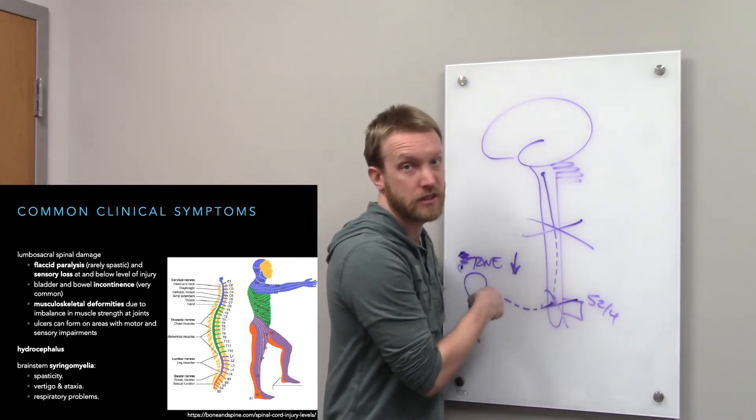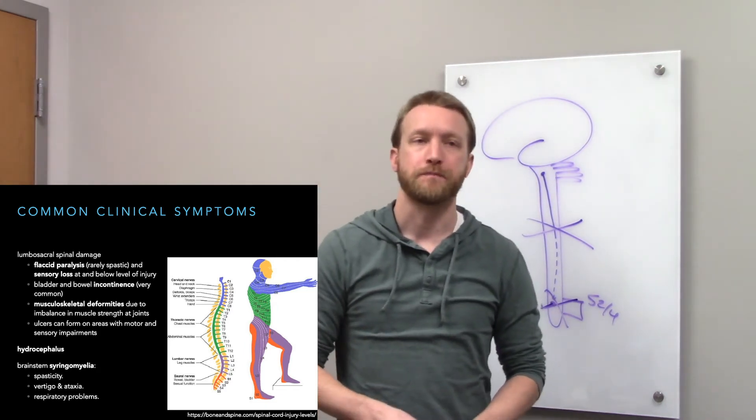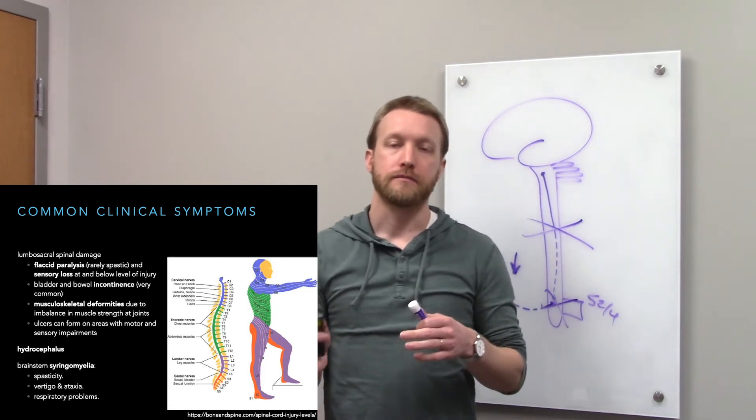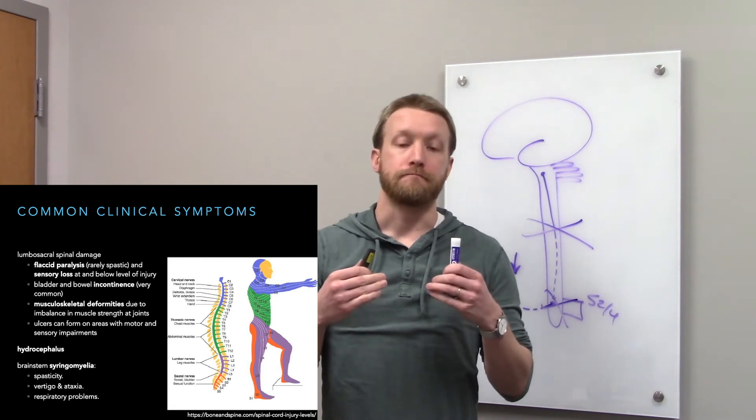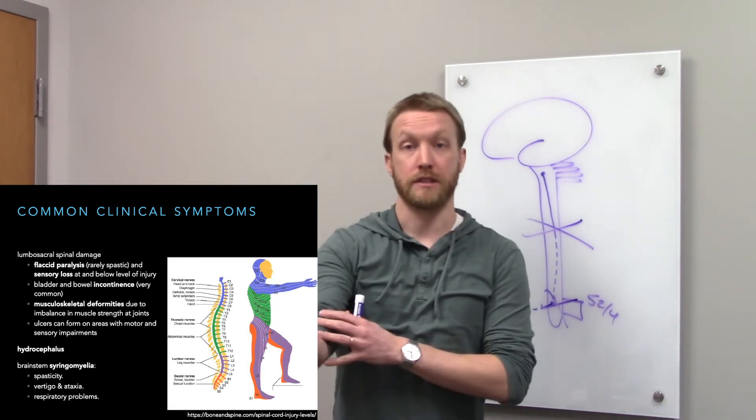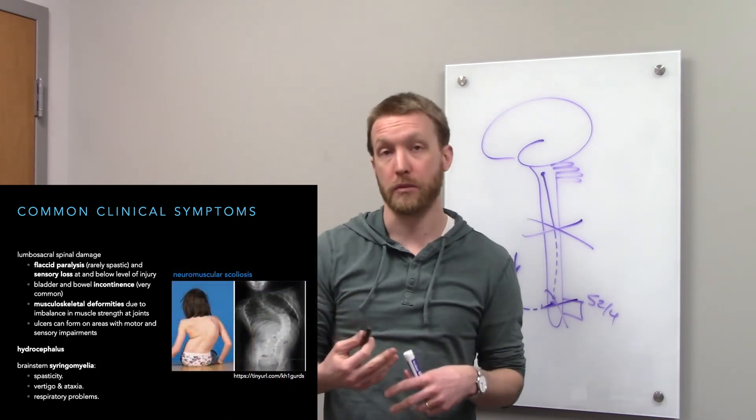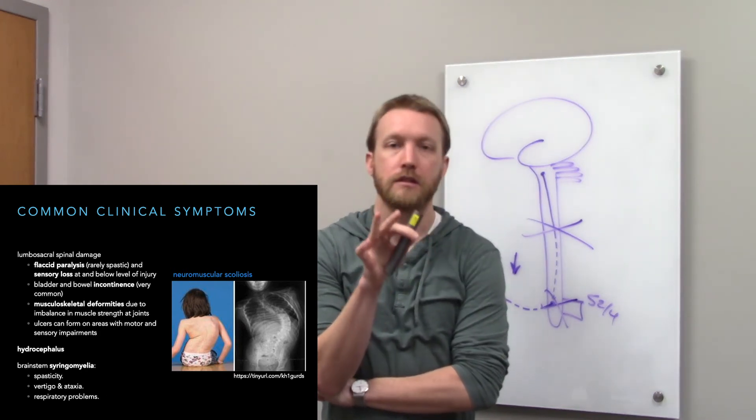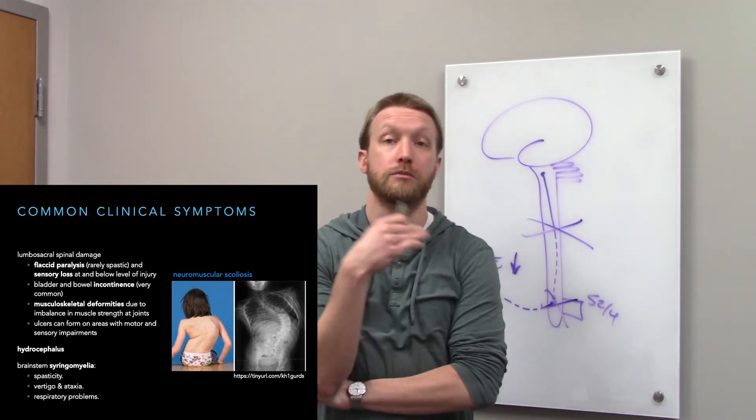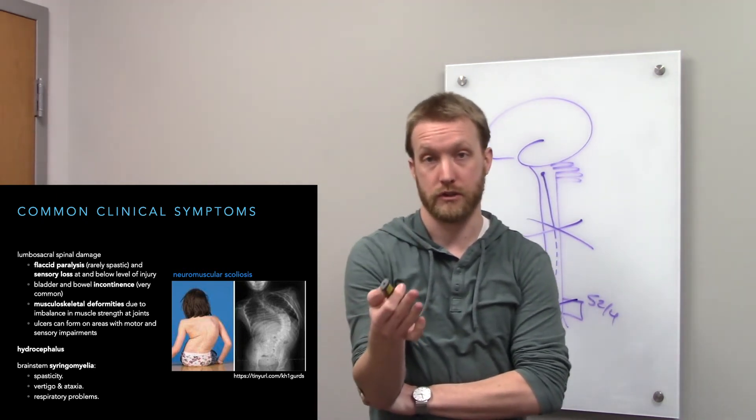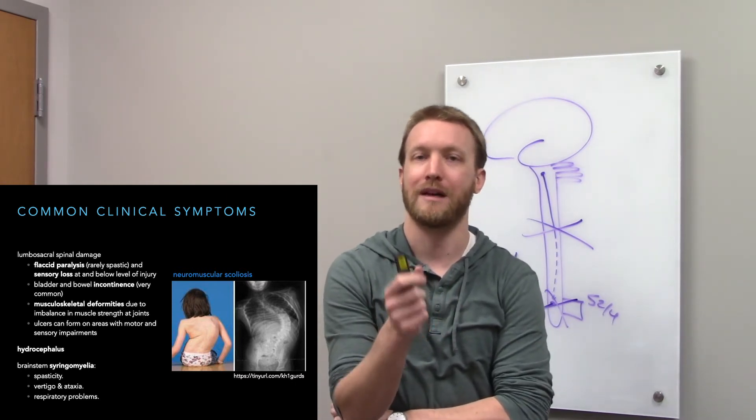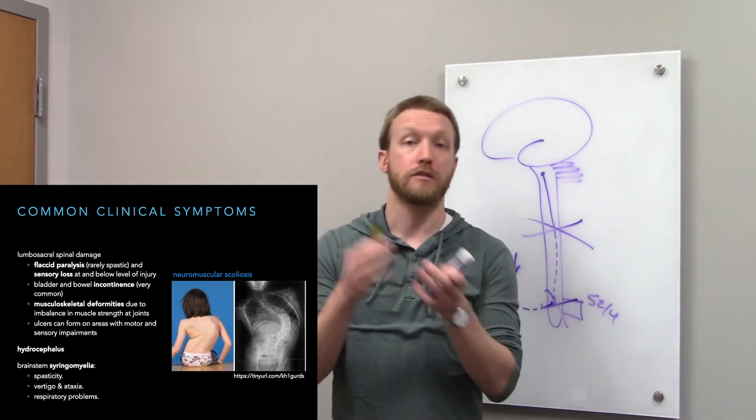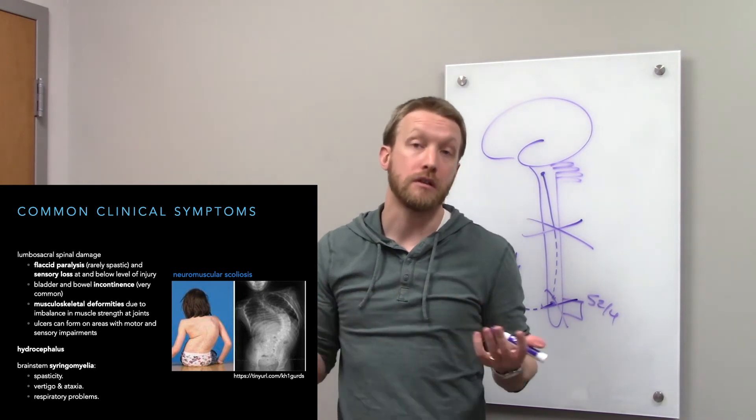Those neurons live in the same area. They just send their axons to a slightly different location. Because of the weakness, sometimes not occurring symmetrically either on sides of the body or on sides of a joint, you can see musculoskeletal deformities in spina bifida because of that imbalance in strength. The motor weakness and the lack of sensation can predispose us to the development of ulcers, because we're putting pressure on one spot, we're not moving around a lot, and we can't feel it. We can't feel the irritation building up. Just like what you'd see in spinal cord injury, because spina bifida is spinal cord injury.